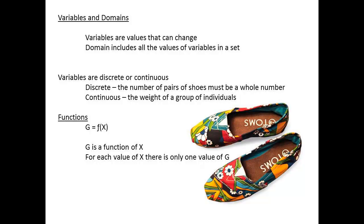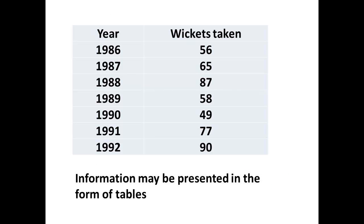Where there is a relationship, we may say one item is a function of another item, meaning that for a particular value of one item — x in this case — there is only one value for g. Here is a particular set of information showing the number of wickets taken by a cricketer each season from 1986 to 1992. Presenting raw information in the form of a table is how we often start.